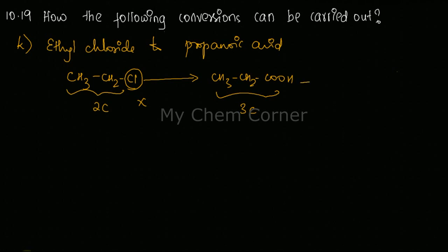Here the functional group is a halogen, and here the functional group is a carboxylic group. So first, what we will do is we will change the halogen to another functional group with carbon in it.